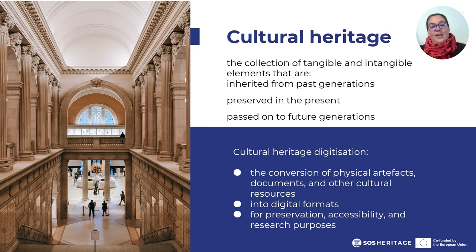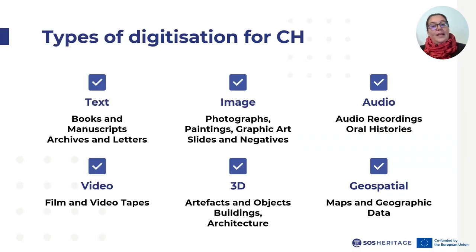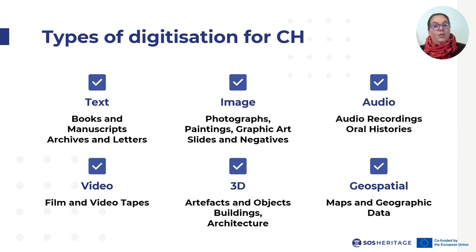There are several types of digitization methods applied to different aspects of cultural heritage. We have text digitization for books and manuscripts, converting printed books, manuscripts and other written documents into digital text formats, often using optical character recognition, or OCR, technology. Or for archives and letters, digitizing historical letters, archives and correspondences for preservation and accessibility.